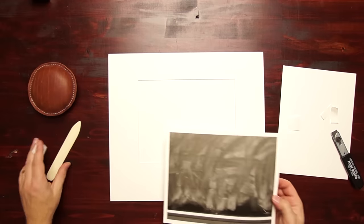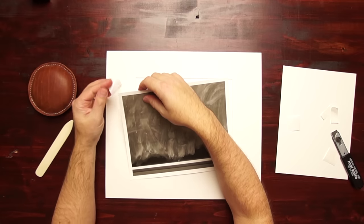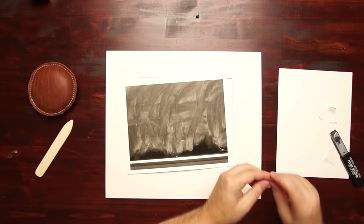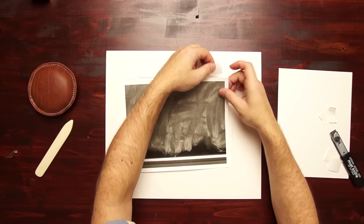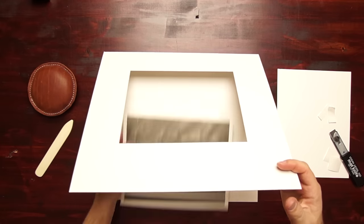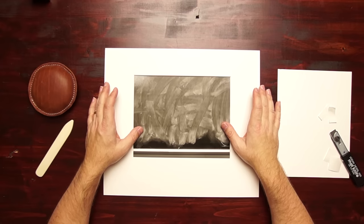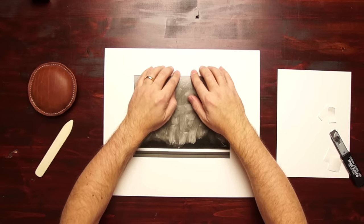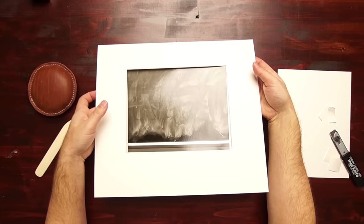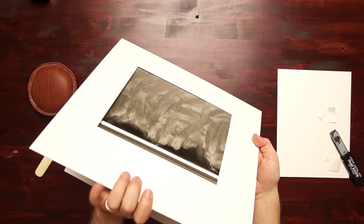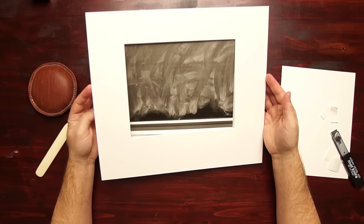The backing board gives it support as well as an archival barrier against any sort of contaminant. Take the tape, put it on the back of the paper. You do not want to put adhesive on the emulsion side. Put it on the back, put it in the mount, and line it up carefully. There we go. And then press down. Flip it over. There it is. That's it. So now it's mounted and it won't fall down.